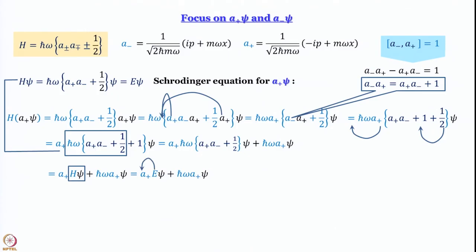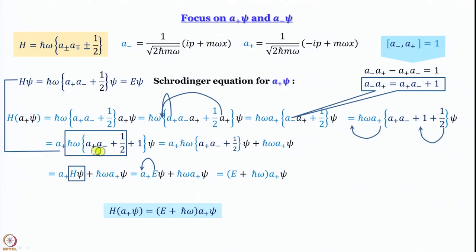Since Hψ = Eψ, we substitute to get a⁺(Eψ) + ℏω·a⁺ψ. Since E is a number (eigenvalue), it can be moved in front: E·(a⁺ψ) + ℏω·(a⁺ψ) = (E + ℏω)·(a⁺ψ). So the final equation is: H·(a⁺ψ) = (E + ℏω)·(a⁺ψ). Calling a⁺ψ = ψ′, this is an eigenvalue equation with eigenvalue E + ℏω.